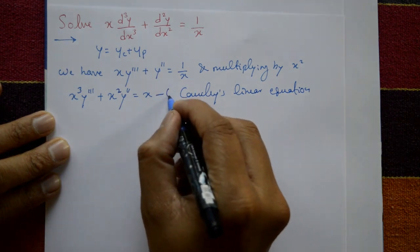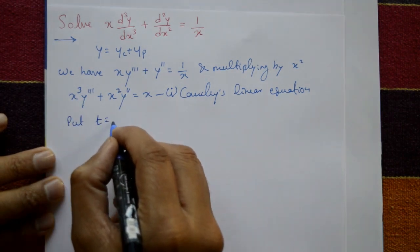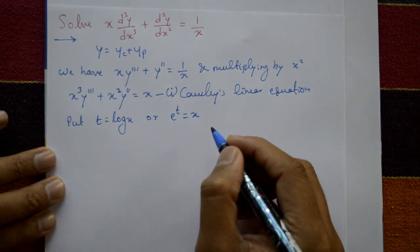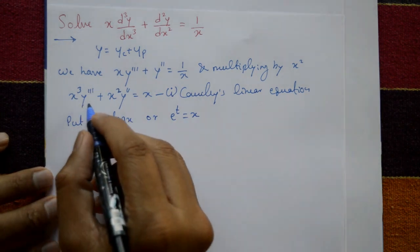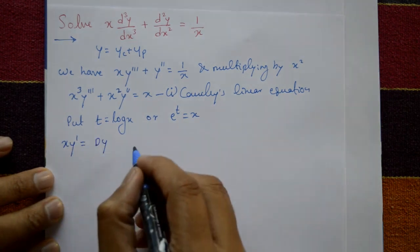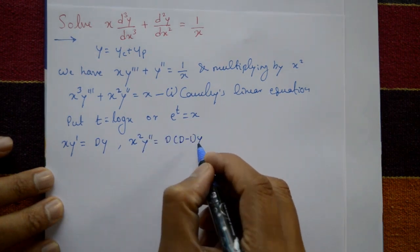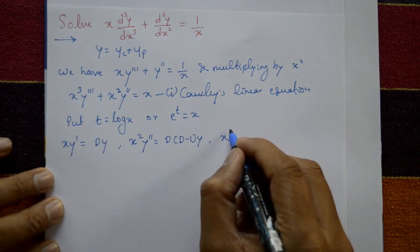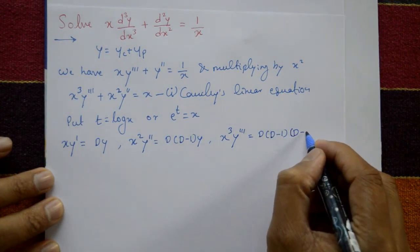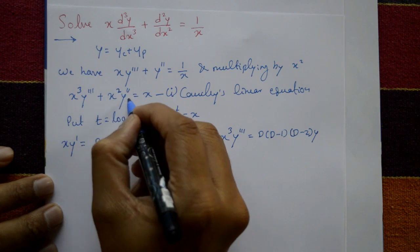For the Cauchy-Euler equation, put t = log x, so e^t = x. The standard results are: x·y' = D·y, x²·y'' = D(D−1)·y, and x³·y''' = D(D−1)(D−2)·y, where D = d/dt. Substitute these results into equation number one.